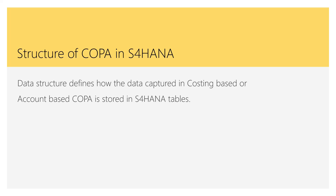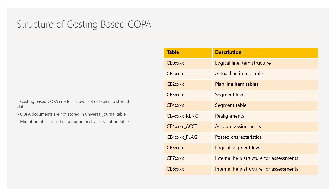The next part covers understanding the data structure of COPA in S4 HANA — specifically what tables are created and where the data is stored for costing-based versus account-based COPA. With costing-based COPA, since it is not reconciled with the GL module, the data is not stored in the universal journal table. When you activate an operating concern with costing-based COPA, various tables are created in the background.